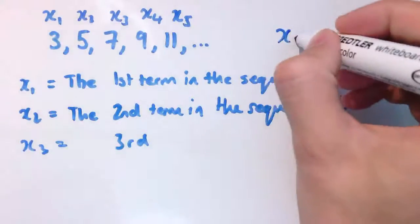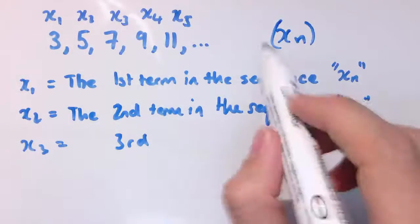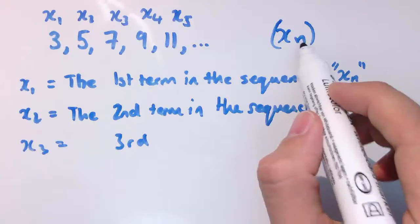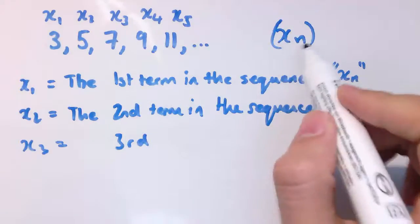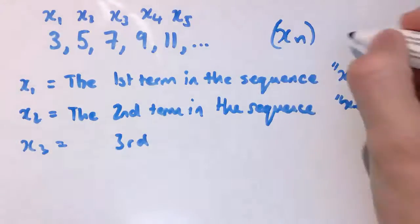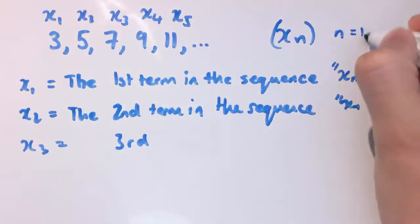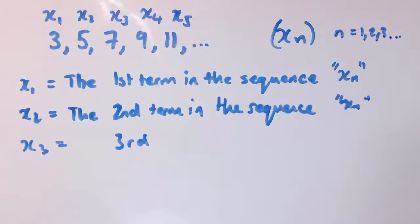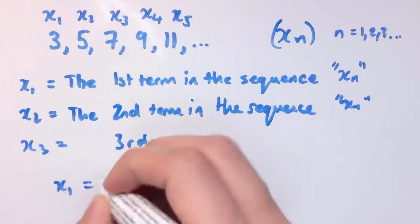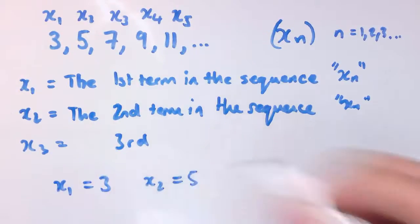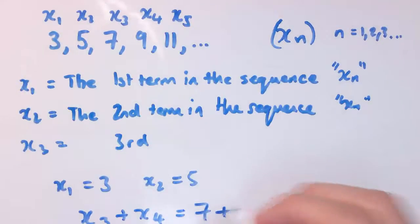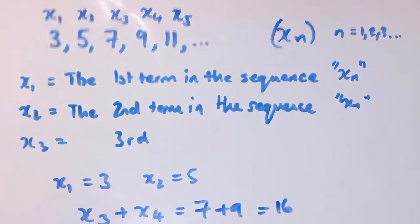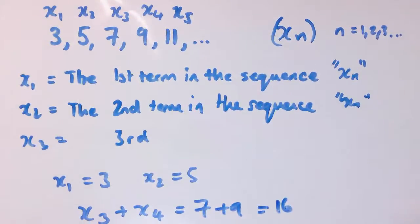I can think of the whole sequence as xn, and the reason we write that is: n is a number that starts at 1, goes up 2, 3, 4, 5, etc. If I take all the different possible values of n from n equals 1, 2, 3, etc., that determines this whole sequence. For this sequence I could write things like x1 is 3, x2 is 5. I could say x3 plus x4, well that would be 7 plus 9, that's 16. We can just use this as a useful notation to describe the sequence.